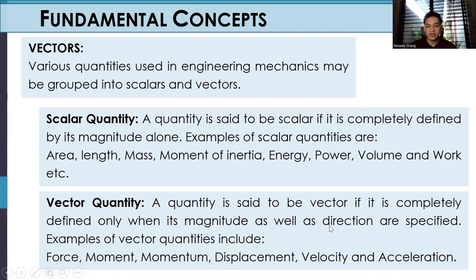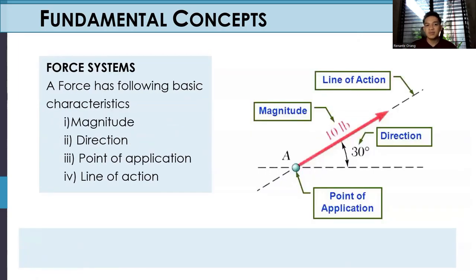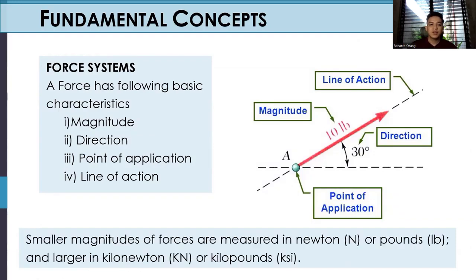Force systems. A force has the following characteristics: magnitude, direction, point of application, and line of action. Smaller magnitudes of forces are measured in newton (N) or in pounds (LB), and larger in kilonewtons (KN) or kilopounds (KSI).